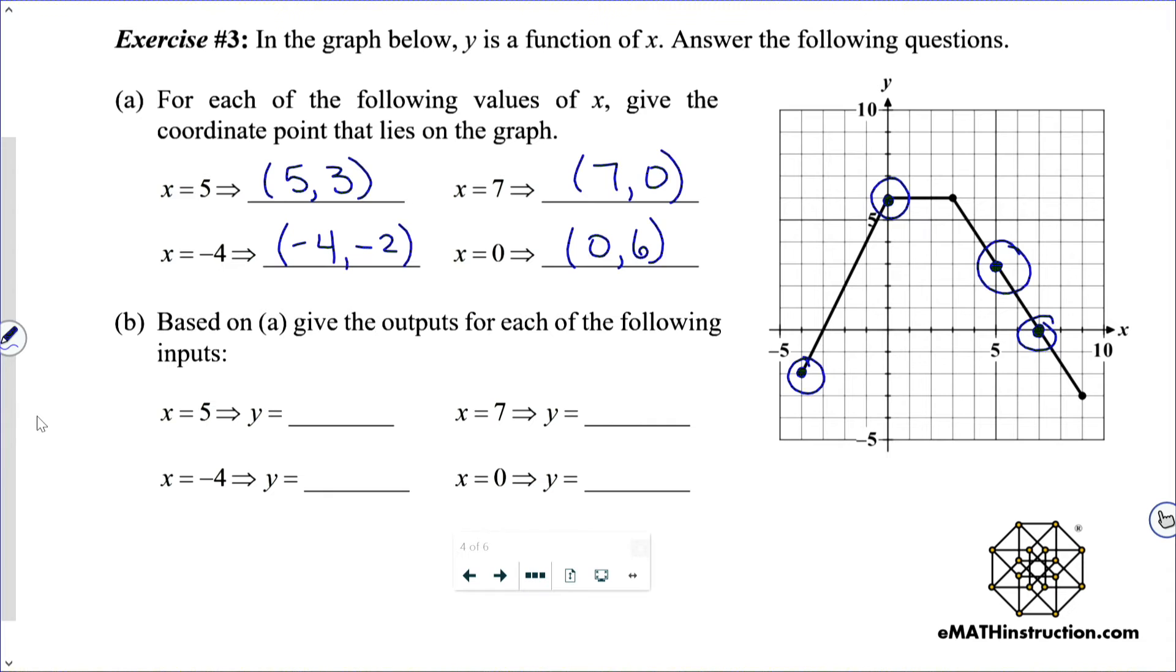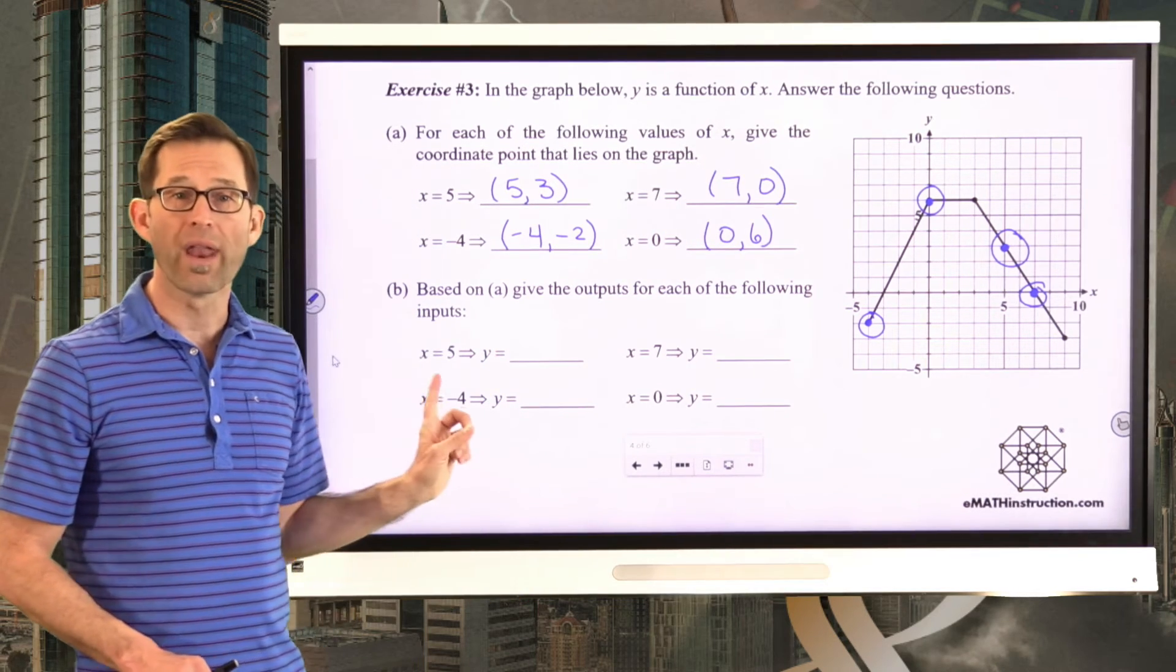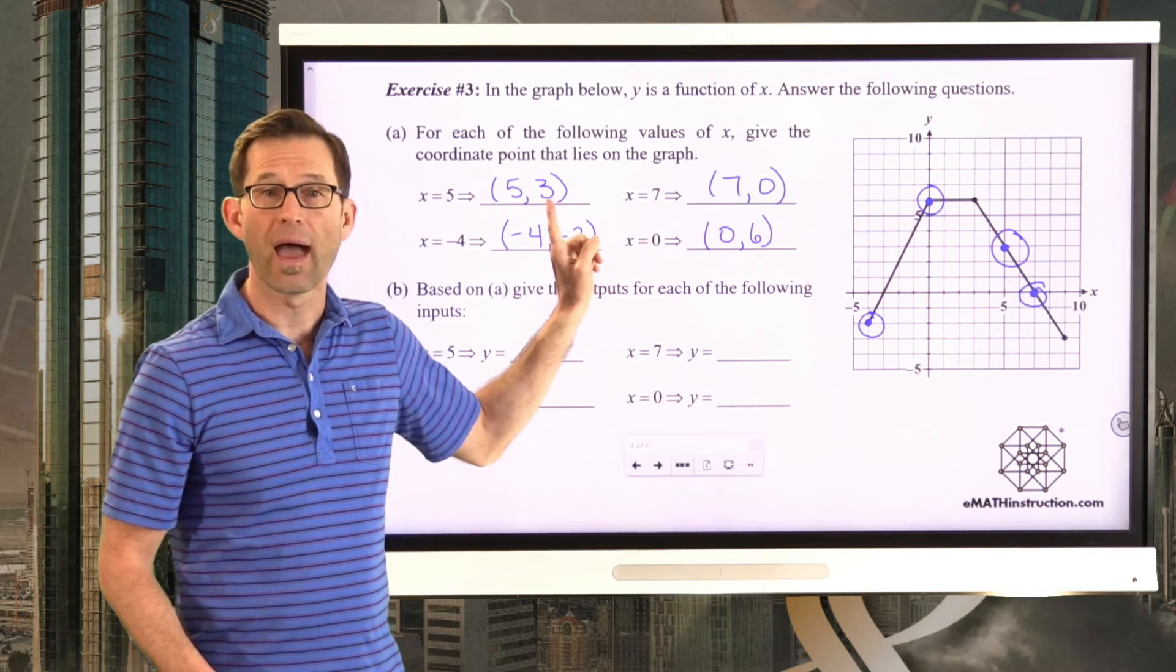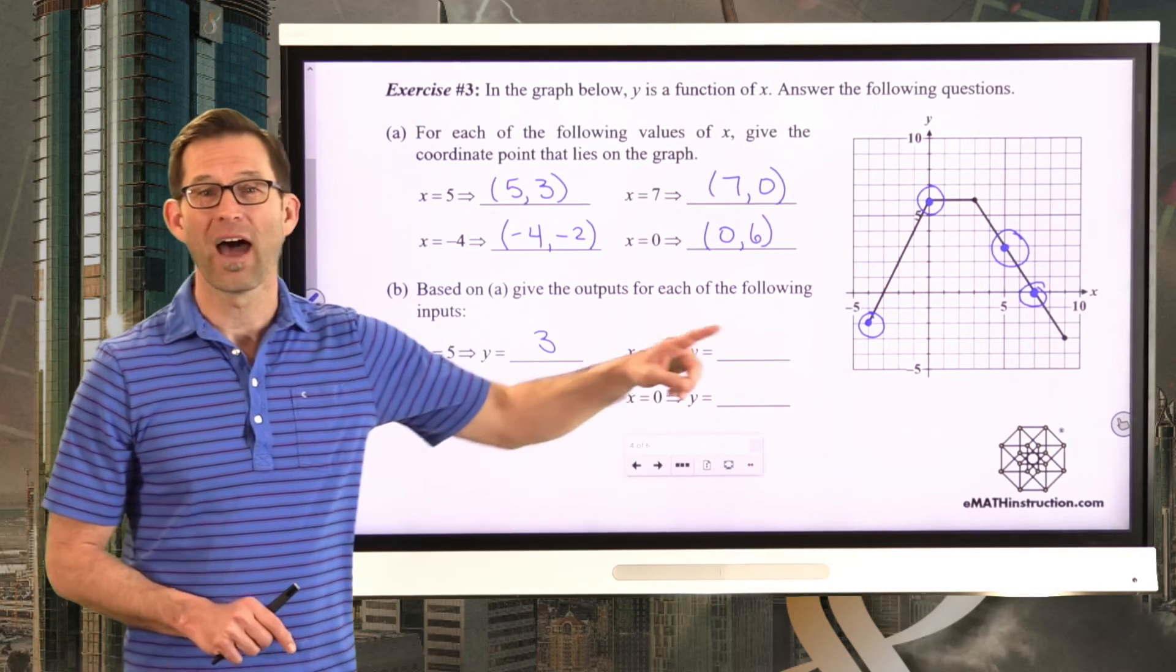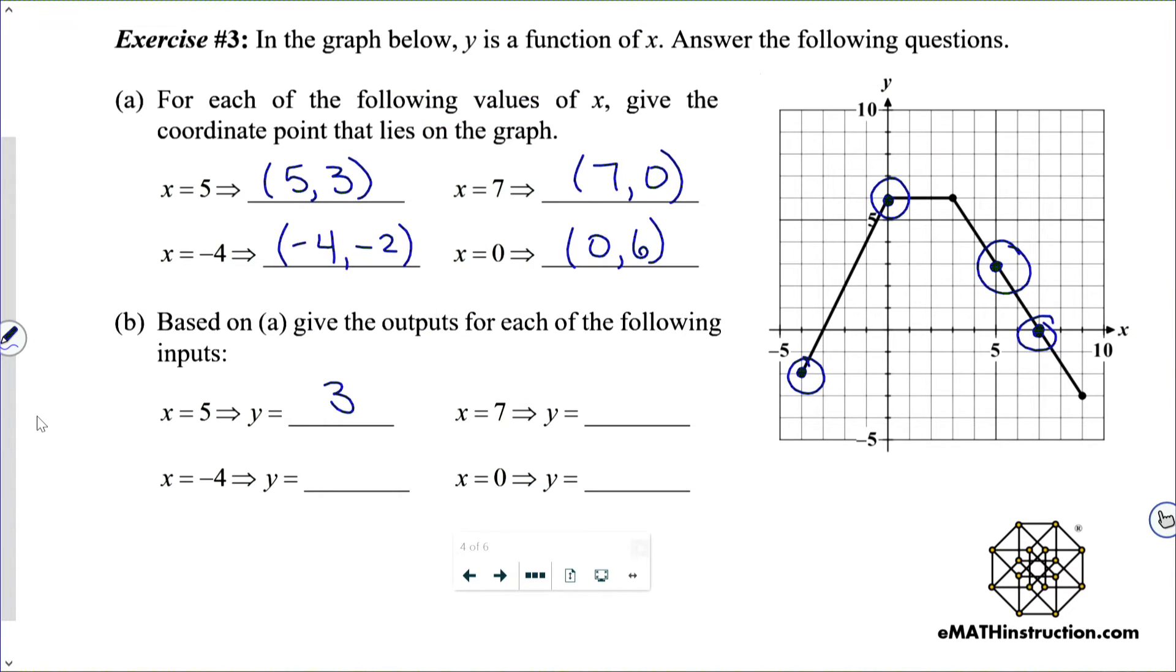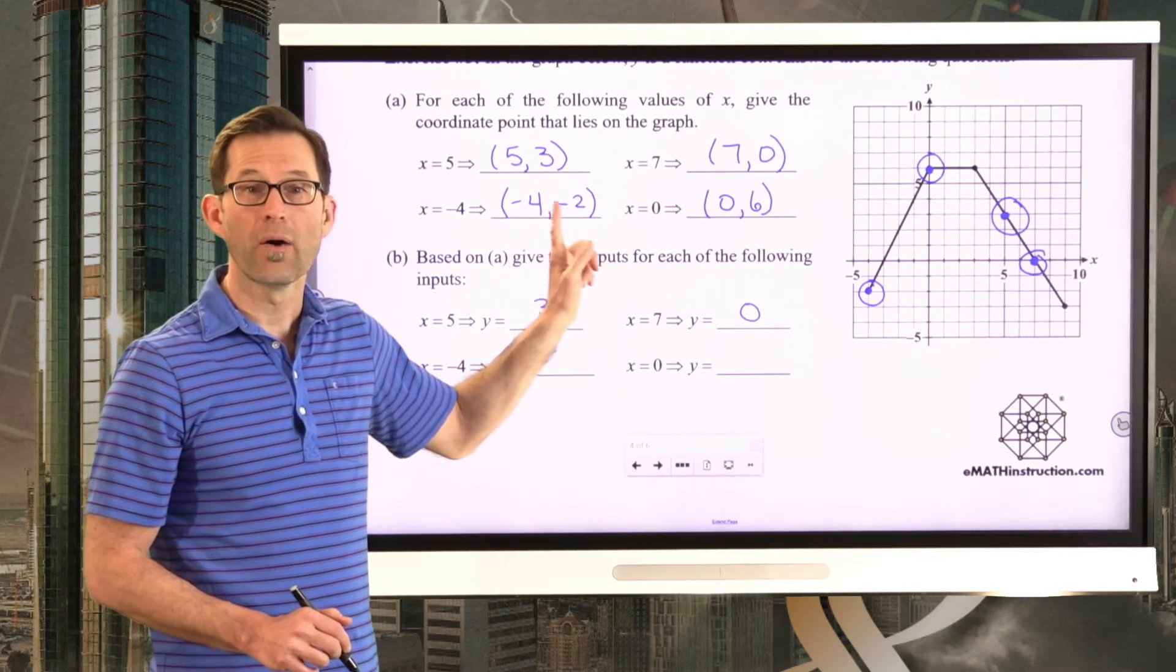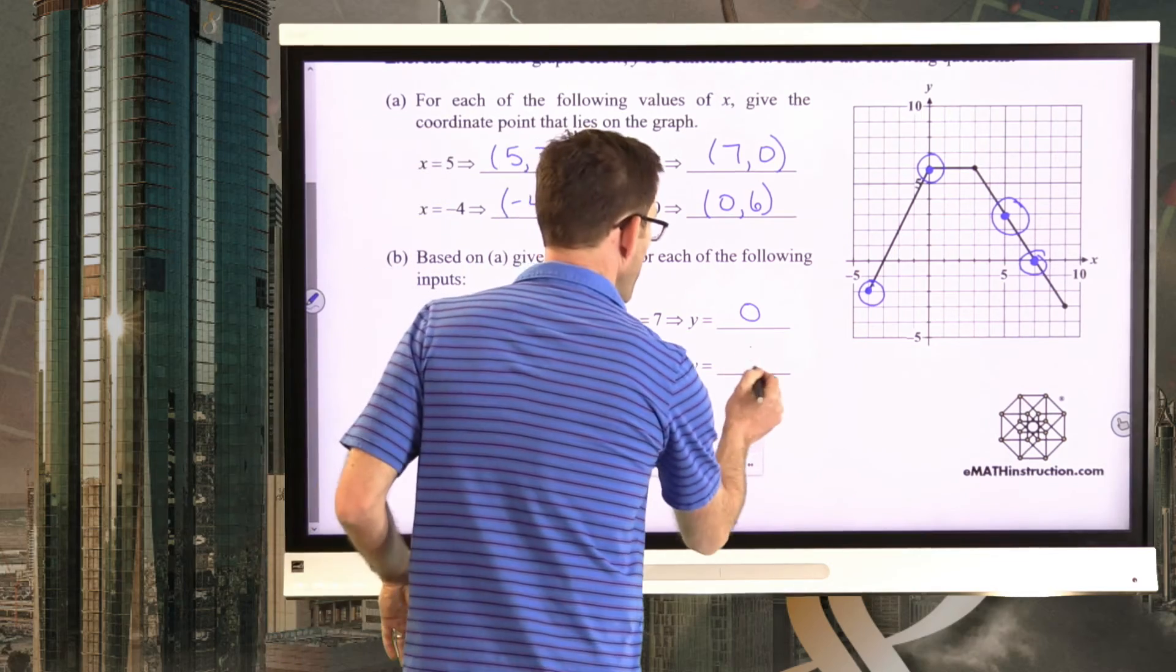Based on a, give the outputs for each of the following inputs. All right, so this was just a precursor. The point is, if I said, what is the output when x is equal to 5? I would want you to go to the graph, go over to x equals 5, go up here and go, oh, that's the point 5 comma 3. The input is 5, the output is y equals 3. So the rest of these are quite easy. Pause the video now and put the outputs into each one of these blanks for these particular inputs. All right, well when x is equal to 7, the output is 0. y equals 0. When x is equal to negative 4, the output is y equals negative 2. When x is equal to 0, the output is y equals 6.